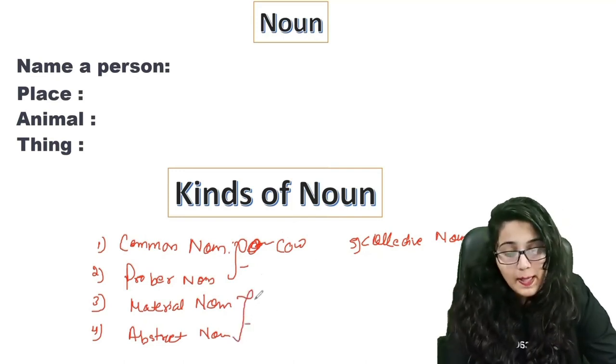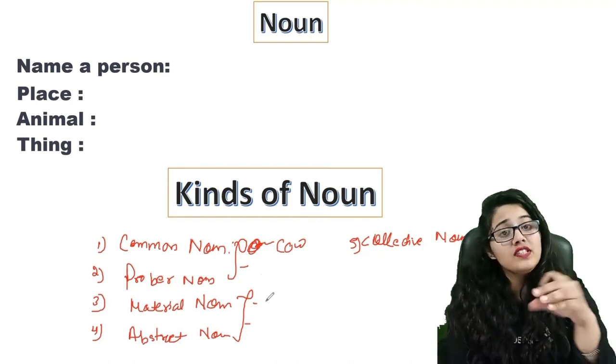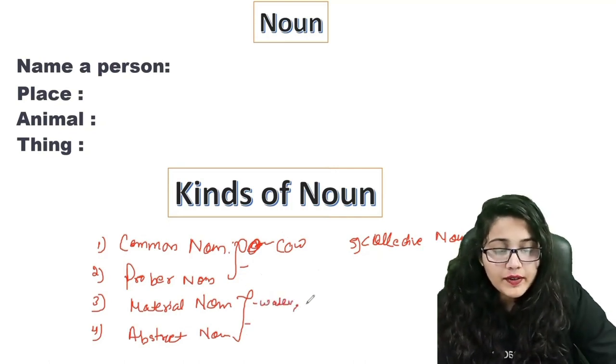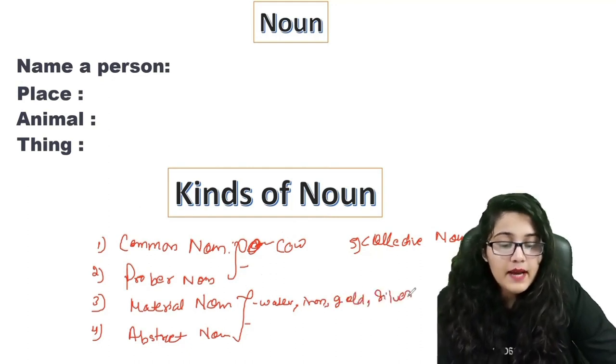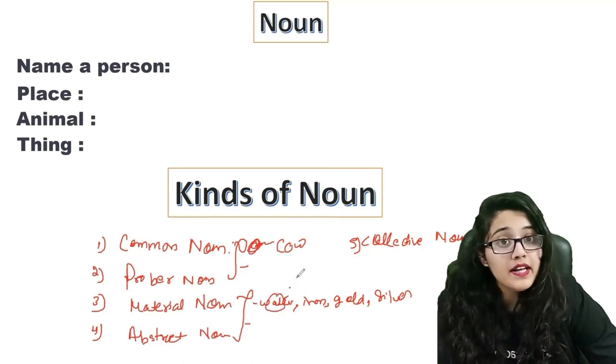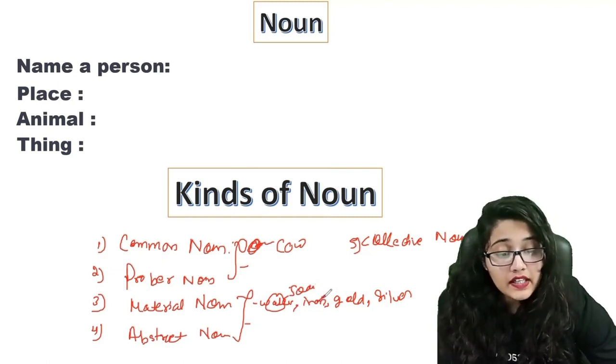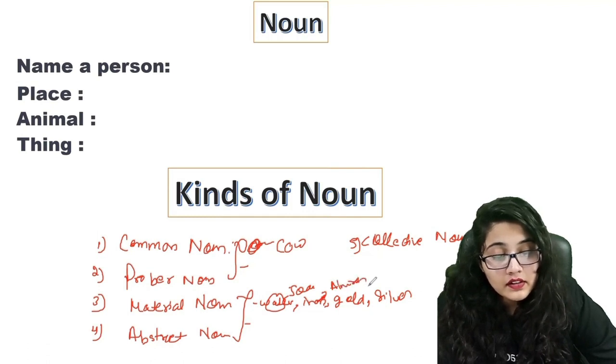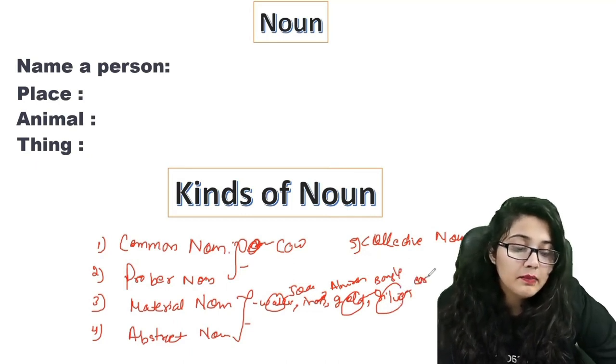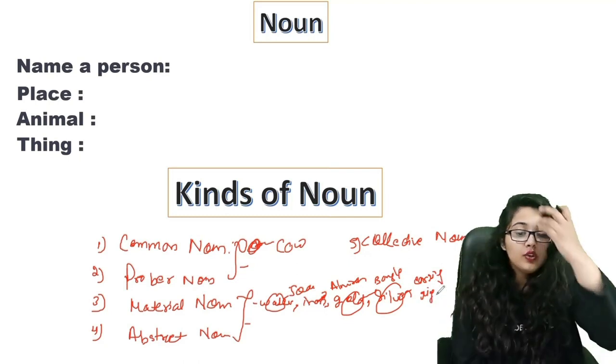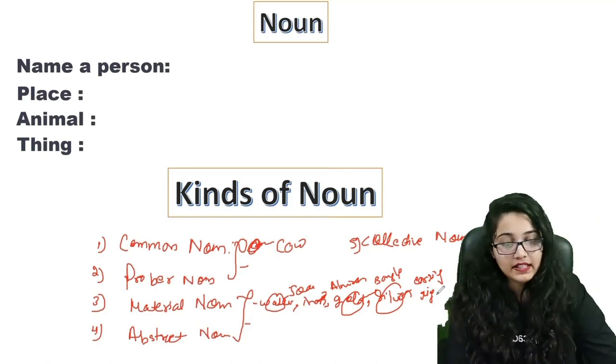We have material and abstract nouns. What is material noun? Material noun is the noun from which we can form a thing or something. Like water, iron, gold, silver. What can we make from water? Lemonade or soda. What can we make from iron? Almira. What can we make from gold? Bangle. What can we make from silver? Earring or a ring. This is our material noun, from which we can make a thing.